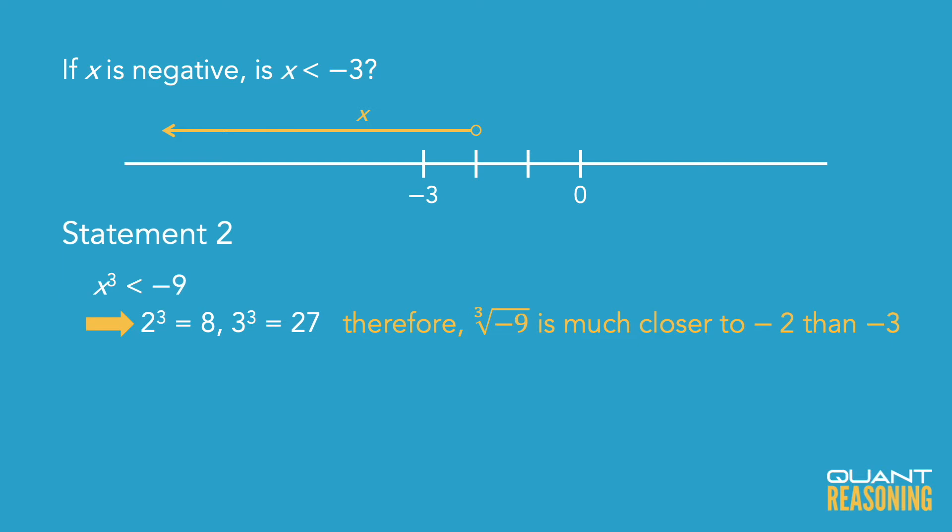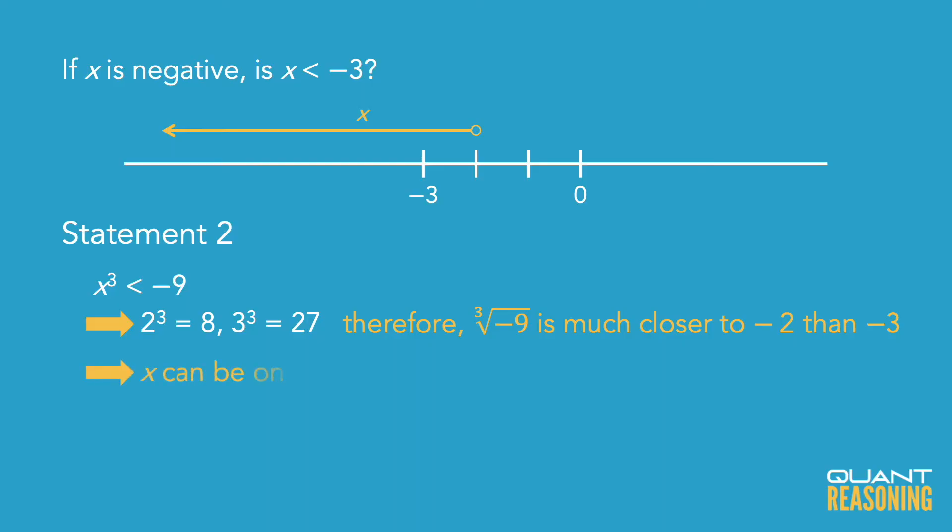So we can tell from statement 2 that x is to the left of negative 2 or even to the left of negative 2 point something small, but what we wanted to know was whether x is to the left of negative 3. And looking at my number line, I think x could be on either side of negative 3, so this statement is not sufficient on its own and the correct answer is A.